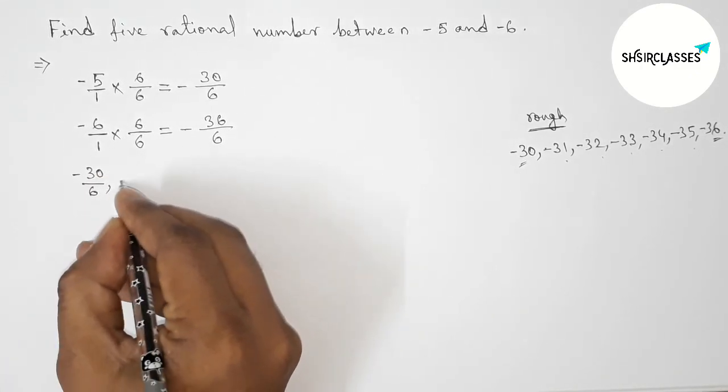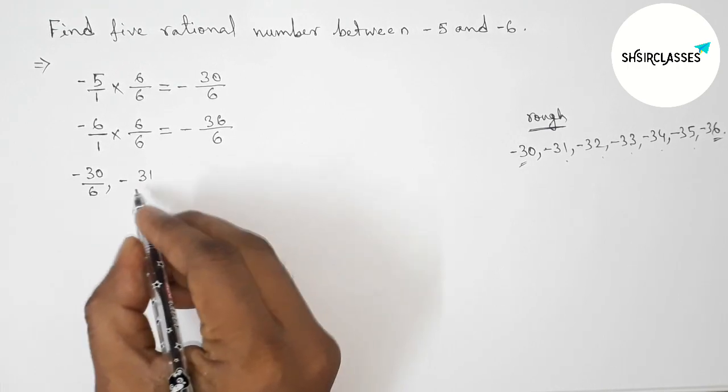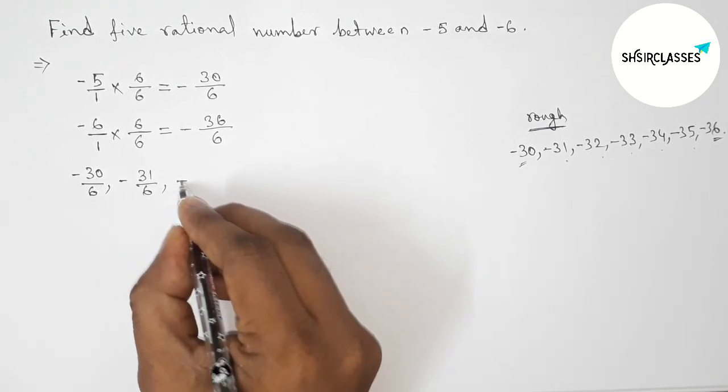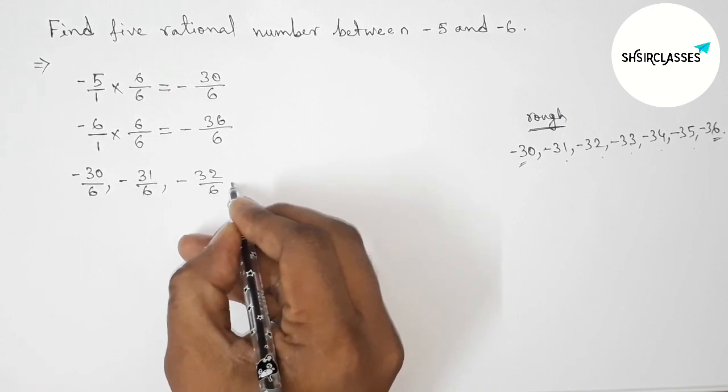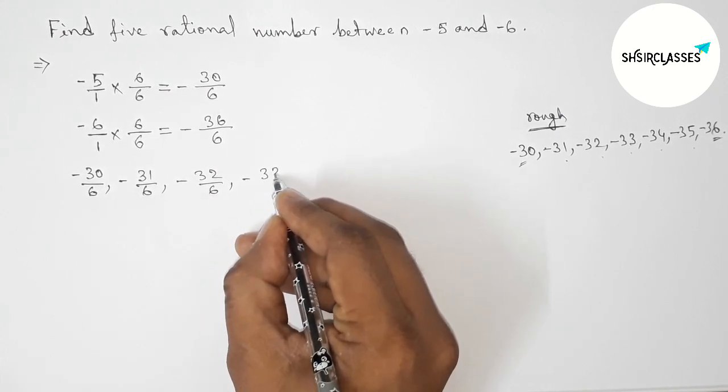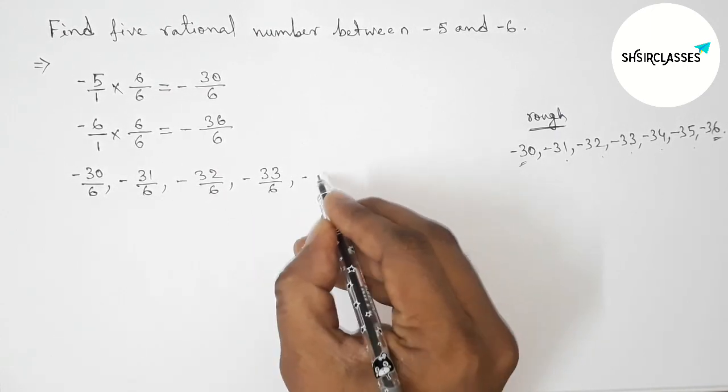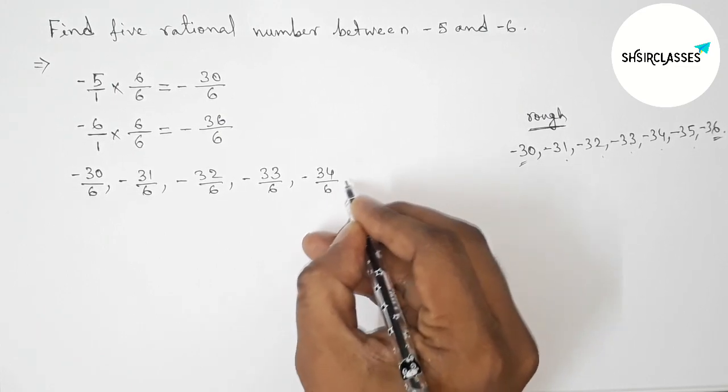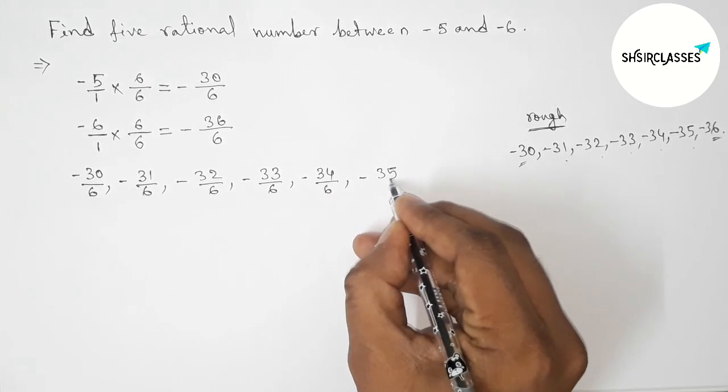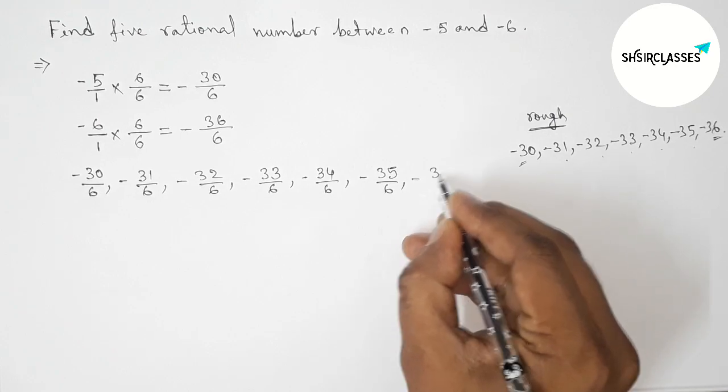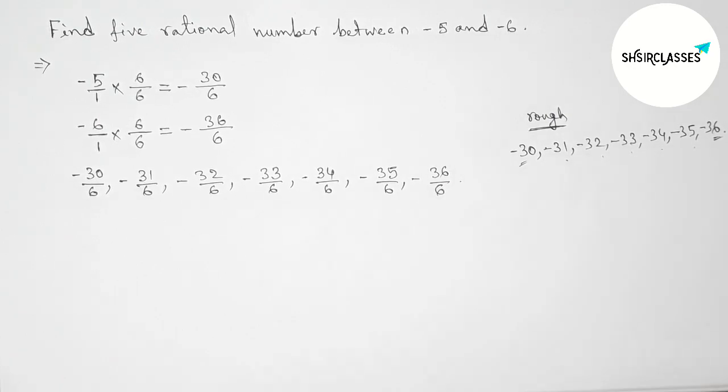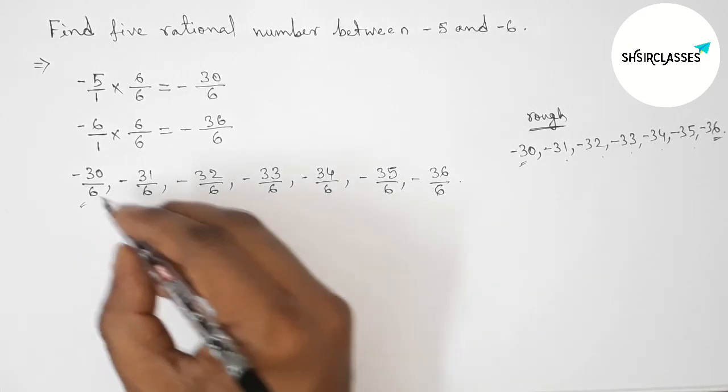First, minus 30 by 6, then minus 31 by 6, then minus 32 by 6, then minus 33 by 6, then minus 34 by 6, then minus 35 by 6, then minus 36 by 6. Between this and this, these are the required 5 rational numbers.